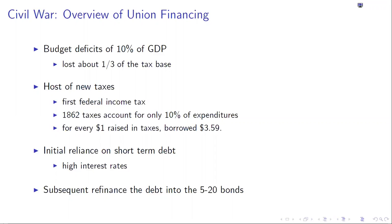During the war, the Union is going to have to institute a whole host of new taxes, including for the first time the income tax. It'll issue nearly $500 million in fiat currency for the first time since the Revolutionary War. Its debt is going to climb from roughly $86 million to over $2.6 billion, climbing over one-third of GDP.